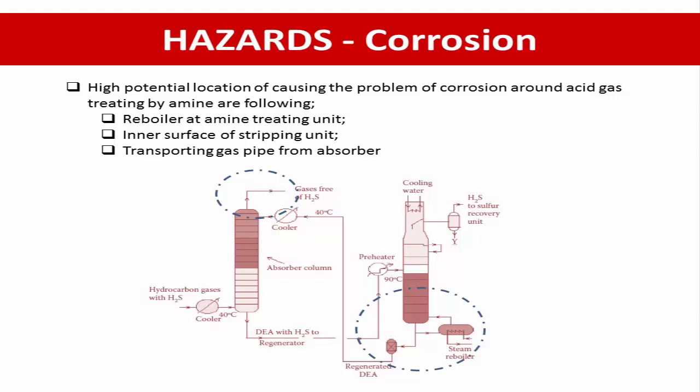The high potential locations for corrosion problems around acid gas treatment by amine include the reboiler at the amine treating unit, the surface of the stripping unit, and piping transporting gas from the absorber. The turnaround solution shall include material selection by considering the maximum solution concentration and temperature, maintaining the amine concentration by controlling hydrogen sulfide and amine loading, and carrying out periodic purification of the amine solution from heat stable amine salts (HSAS). That concludes the general solution to prevent or reduce corrosion in acid gas treatment. Thank you for watching.